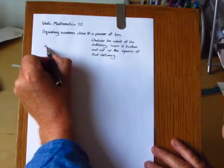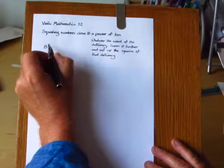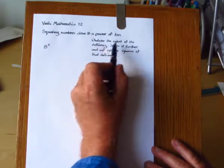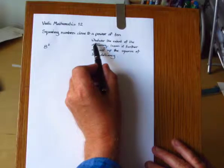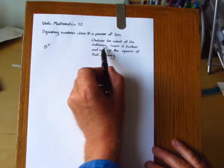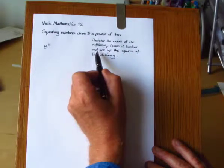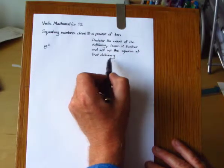So let's look at 8 squared. There's a sub-sutra here, a sub-rule. It's quite long but simple enough to follow. Whatever the extent of the deficiency, lessen it still further and set up the square of that deficiency.